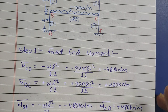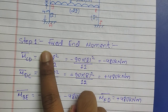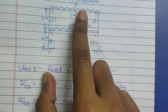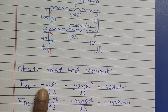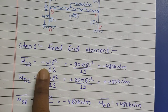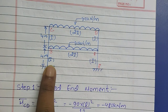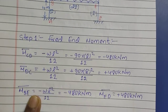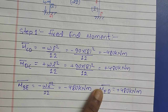Continuing with the solution, we come to Step 1. In Step 1, we need to find the fixed end moment. As you can see, the beam is loaded by a UDL, so the fixed end moment for UDL is given by the formula ±wL²/12. Using this formula: for CD it is −wL²/12, for DC it is +wL²/12, similarly −wL²/12 for BE and +wL²/12 for EB. The fixed end moment works out to ±480 kN·m.